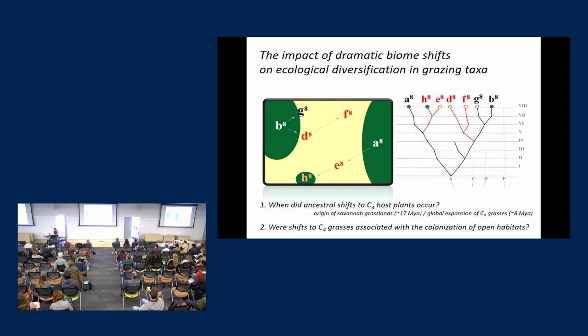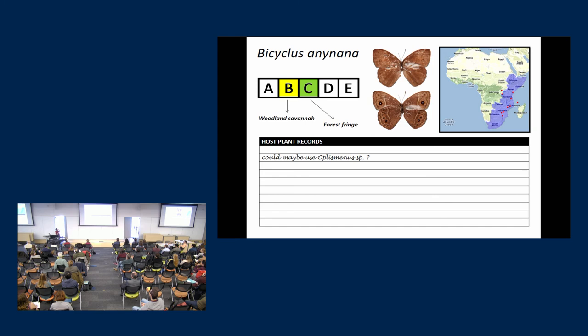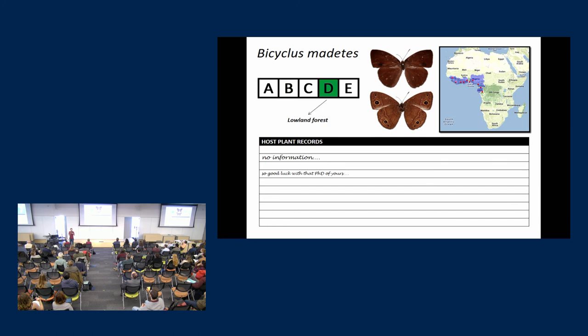So these two were kind of my key questions. When did ancestral shifts to C4 grasses occur? Did it coincide with the origin of savannah grassland or the expansion of the C4 grasses a bit later? And were these two shifts associated with each other? So a shift to C4 and a shift to start using open habitats. So I thought I'd dig into literature. There's a lot of information about butterflies, which is great because they've been studied by naturalists for years. So I thought I'd just pick one of the species, in this case, Bicyclus anynana. I start going through the literature. What is known about the host plants in this case? Could maybe use Oplismenus, which is a C3 grass, so for me interesting. And I thought if I keep doing this for all these species, I will end up with my butterfly species and a list of host plants, and I will try to map them on top of each other. I was already quite disappointed by this. Could maybe use an NSC3 grass. But then when I go to the next species, there's actually no information. And this was actually true for most of the species. So good luck with that PhD of yours. What are you going to do?